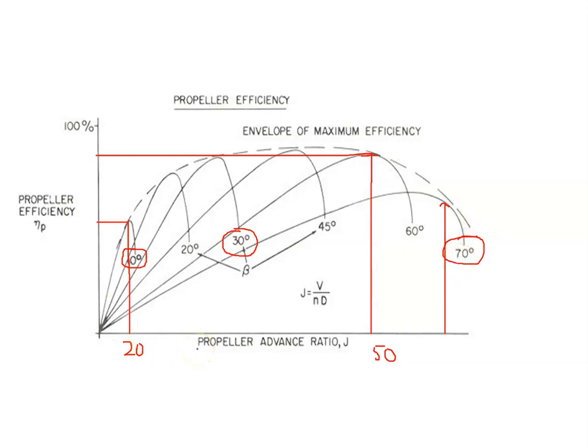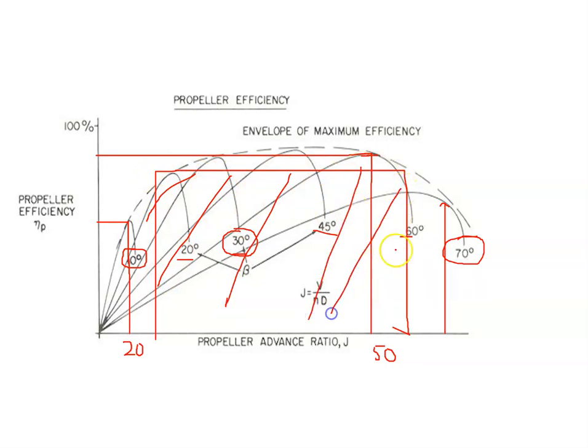So with a fixed pitch propeller, you're sort of limited in your speed range. But with a variable pitch propeller where you can actually change the blade angle, you can maximize your efficiency across a large speed range. If we're looking in here, efficiency is pretty high over this large speed range.